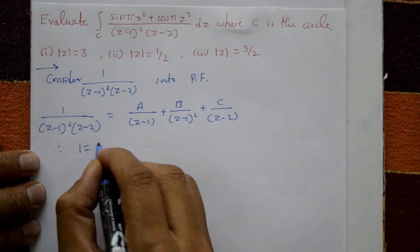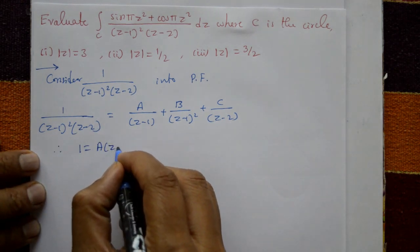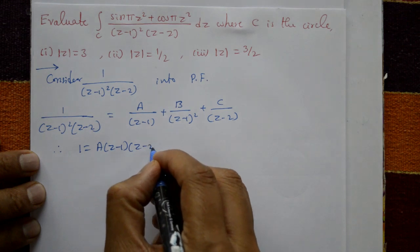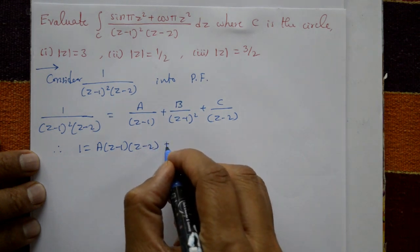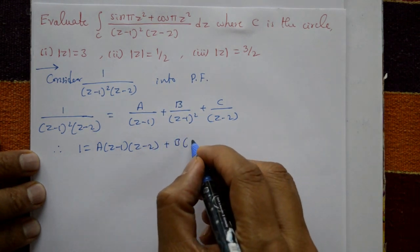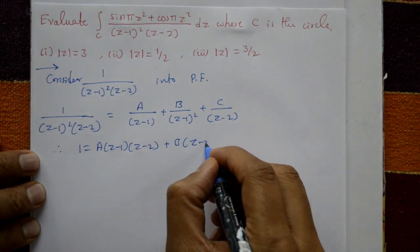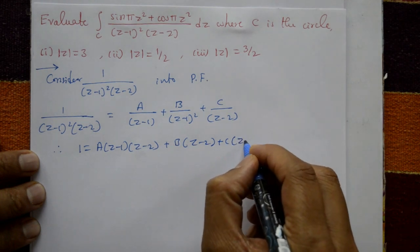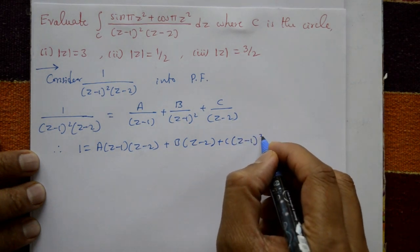So we have 1 = A(z-1)(z-2) + B(z-2) + C(z-1)². Now we find the values of A, B, and C.